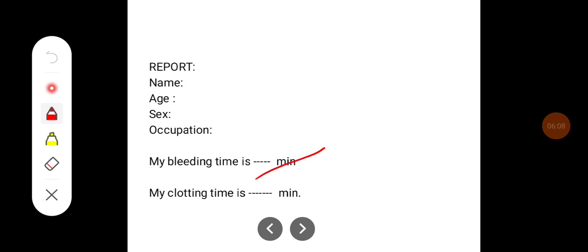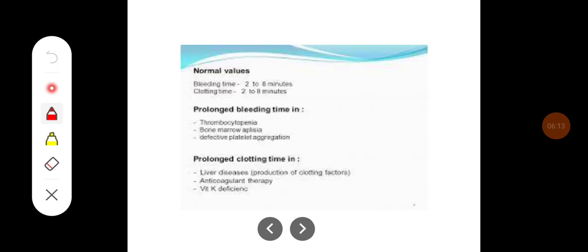My bleeding time is so many minutes, or clotting time is so many minutes. The normal value of bleeding time is 2 to 6 minutes. Clotting time is 2 to 8 minutes.